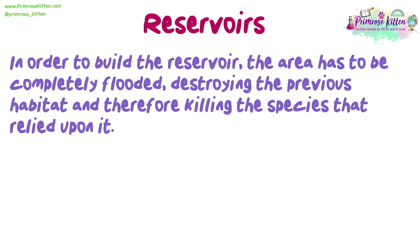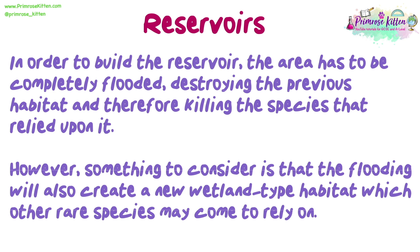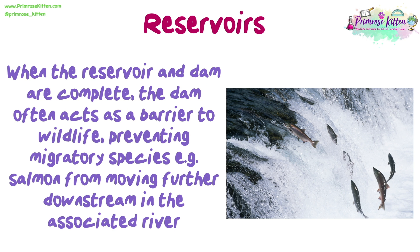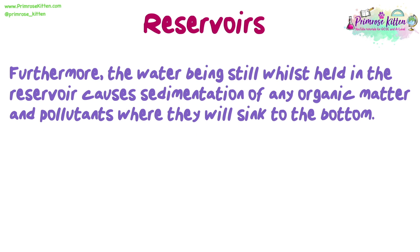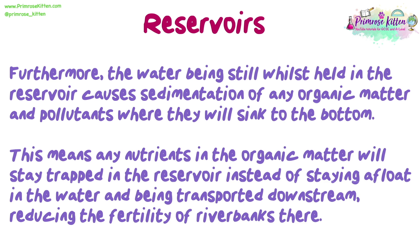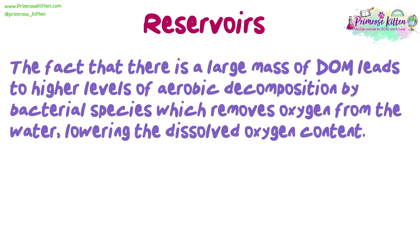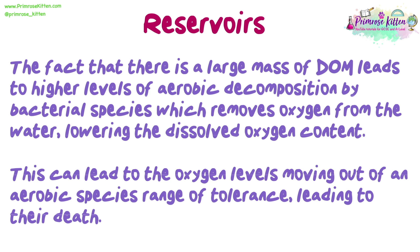In order to build the reservoir, the area has to be completely flooded, destroying the previous habitat and therefore killing the species that relied upon it. However, the flooding will also create a new wetland-type habitat which other rare species may come to rely on. When the reservoir and dam are complete, the dam often acts as a barrier to wildlife, preventing migratory species like salmon from moving further downstream in the associated river. Furthermore, the still water held in the reservoir causes sedimentation of organic matter and pollutants, which sink to the bottom. This means nutrients in the organic matter stay trapped in the reservoir instead of being transported downstream, reducing the fertility of river banks. The large mass of dead organic matter leads to higher levels of aerobic decomposition by bacterial species, which removes oxygen from the water, lowering the dissolved oxygen content. This can lead to oxygen levels moving out of an aerobic species' range of tolerance, leading to their death.